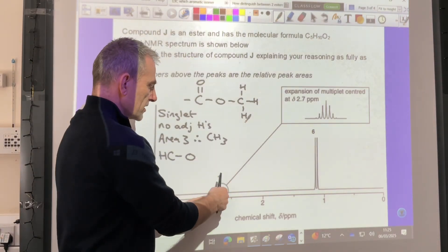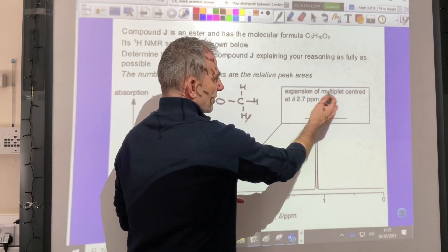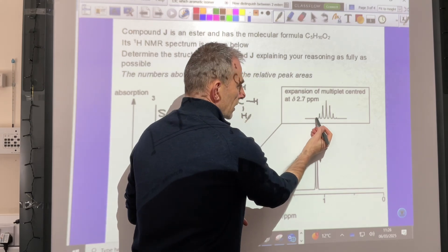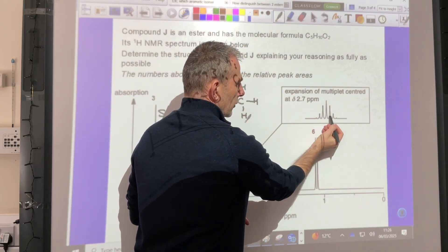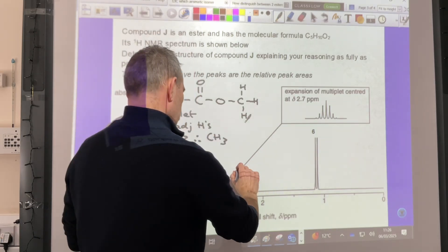Moving on, we've got a multiplet centered at delta 2.7. So I'm just going to count up the lines there, 1, 2, 3, 4, 5, 6, 7. So we've got a heptate, so I'm just going to say heptate there.